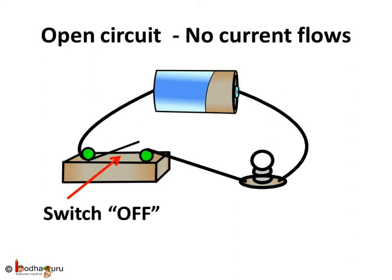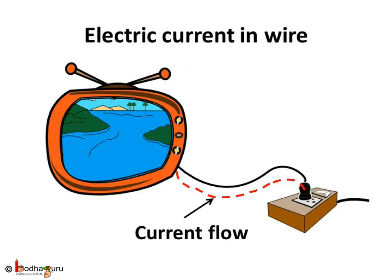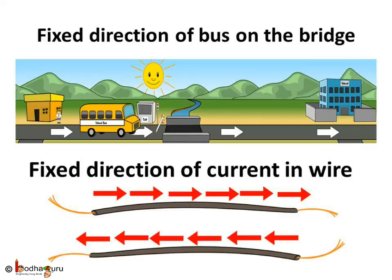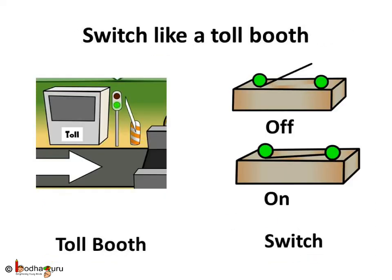Now, we have a fair idea of how electricity works. The electricity is something that flows in the electric wire. The flow of the electric current is in a fixed direction only like the flow of bus on a one-way bridge.